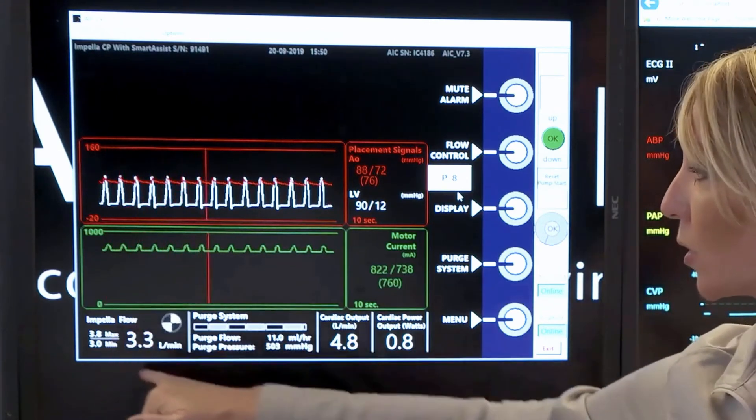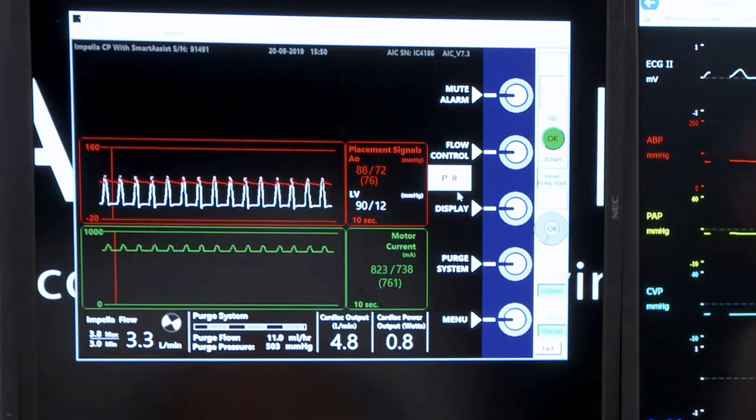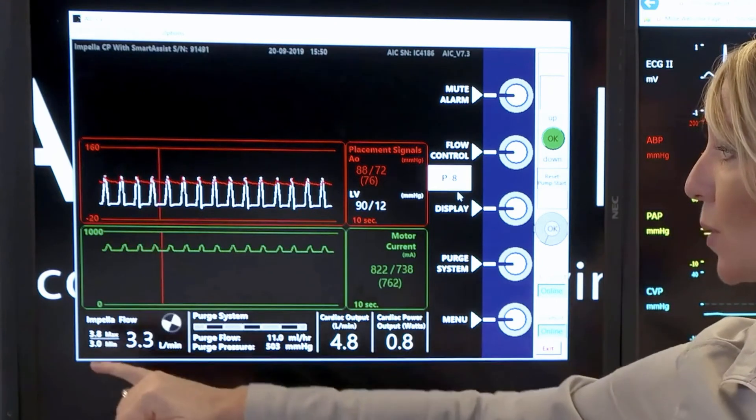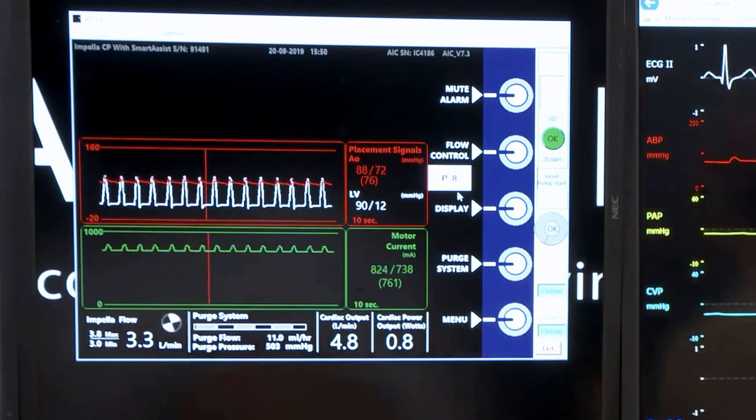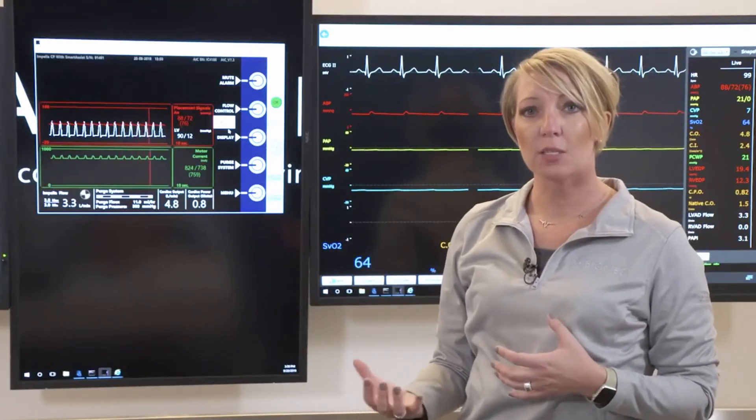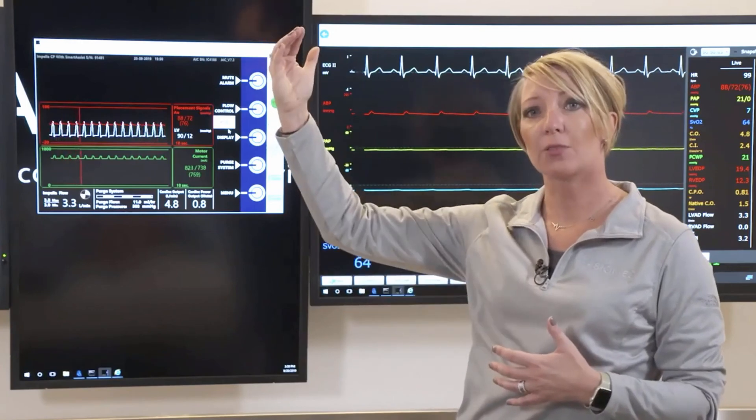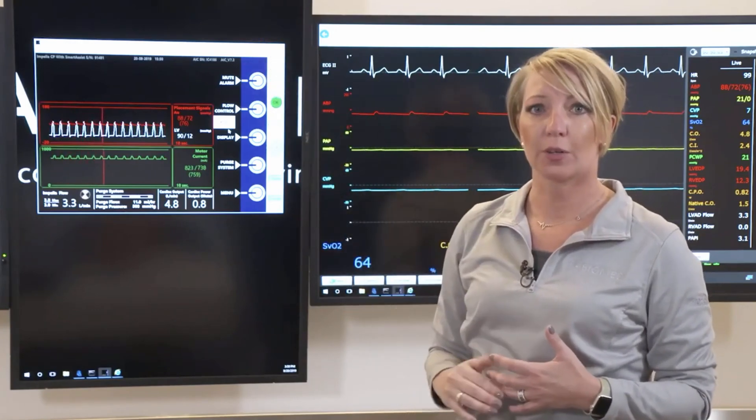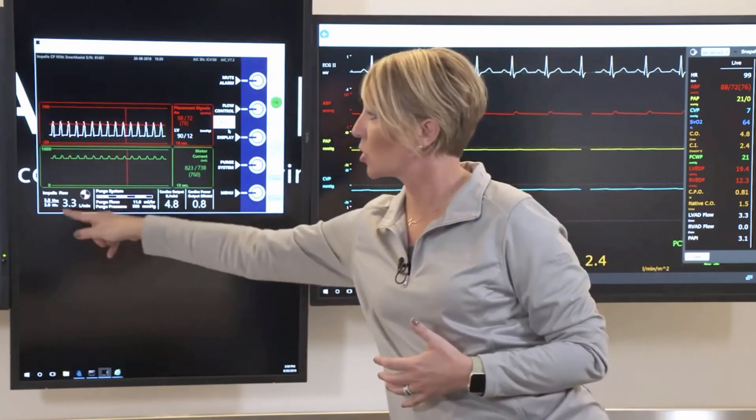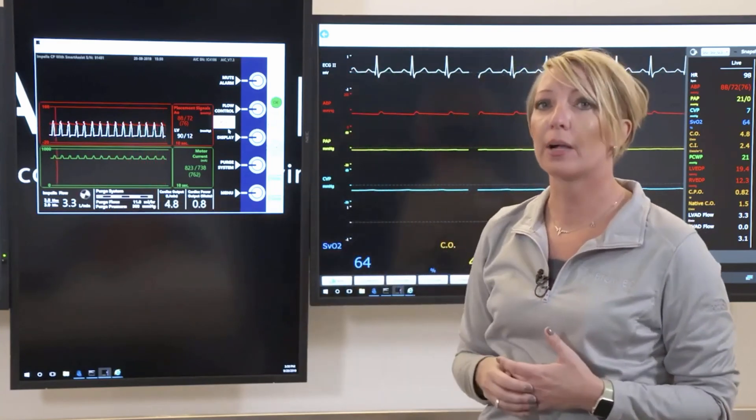You'll notice that the larger number here is giving the average amount of flow at that given P level. Max flows 3.8, min flows are going to be 3. So even though this is a continuous flow device, we still have the native heart working as well. So we will have a max flow and a min flow during the cardiac cycle. This is just the average amount of additional flow the Impella is giving.